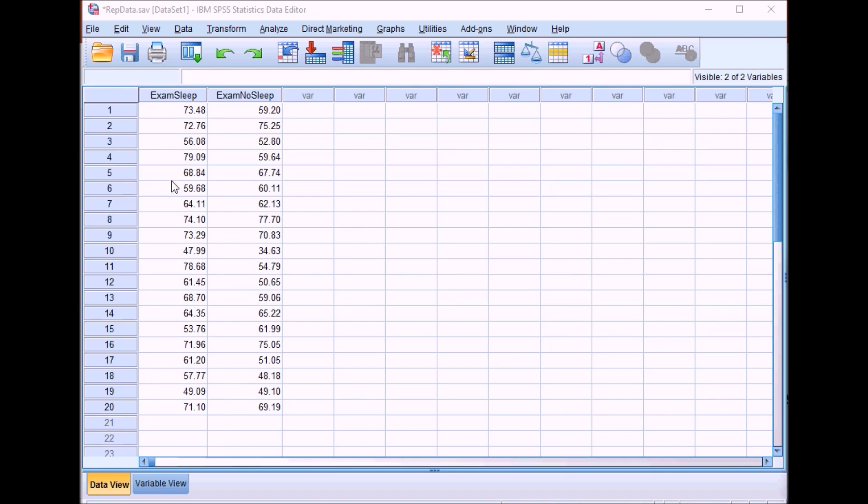What we do have this time is two columns representing one of each of the conditions. So this is the sleep condition where they had a full night's sleep, and this is the no sleep condition where they were kept up all night. The independent variable is represented, each of the groups is represented by a separate column, and then within these columns, the data points themselves represent the score on the dependent variable.